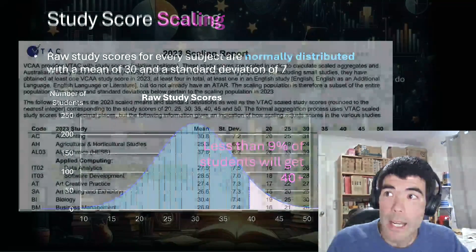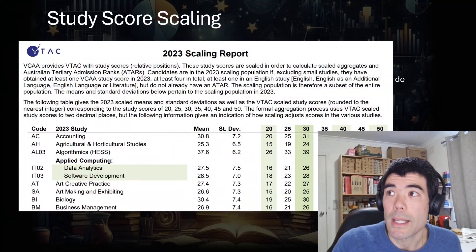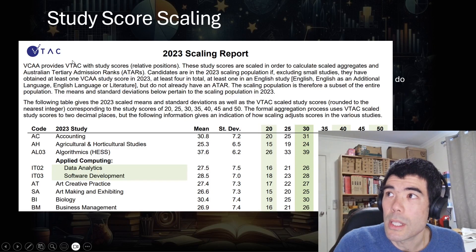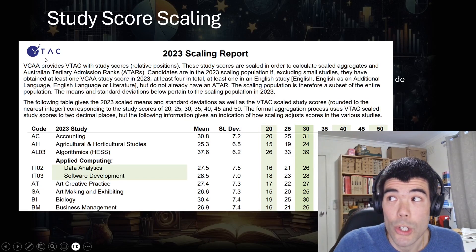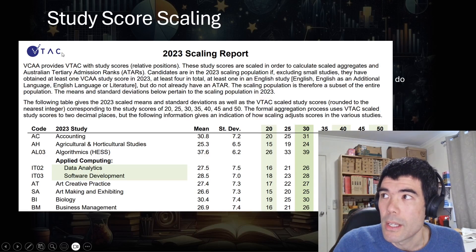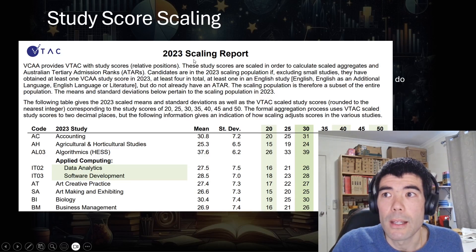But of course, as we said, subjects are all different. So this is why they're scaled. And the study scores are scaled by the VTAC, that is the Victorian Tertiary Admissions Centre. So they handle university applications and they do the scaling. They produce this report every year,